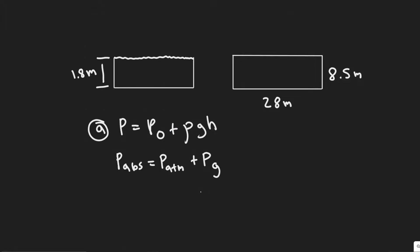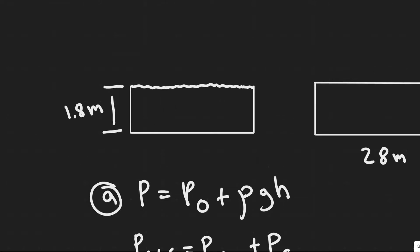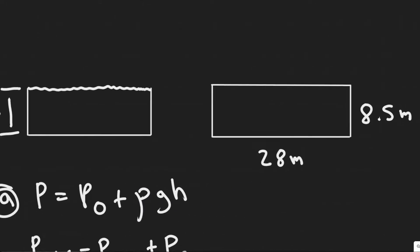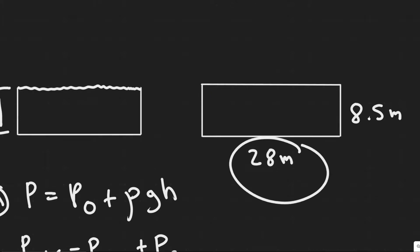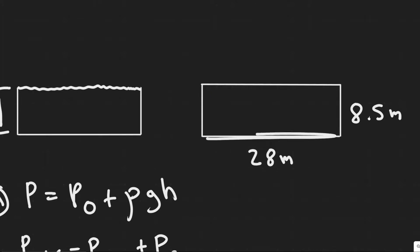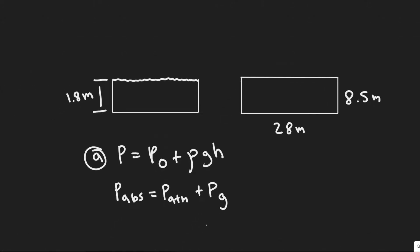The first thing you always want to do is draw a picture. You can imagine this right here is our pool, and we're looking at it through the side of it. This is the top of the pool, and we know the depth to the bottom is 1.8 meters. Looking at the pool from the top, we're given its dimensions: 28 meters in length by 8.5 meters in width.